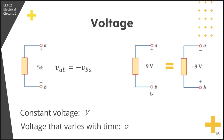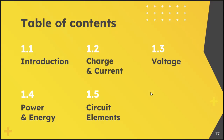By convention, a constant voltage is represented by capital V, while a sinusoidal time-varying voltage is called an AC voltage and is represented by small v.